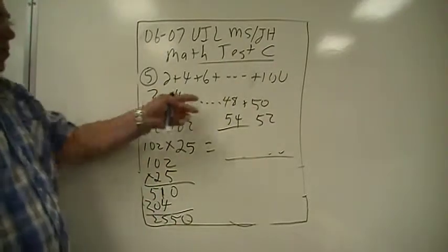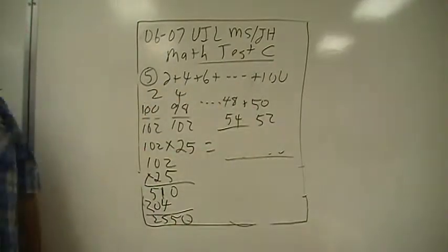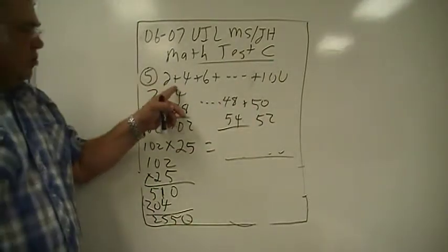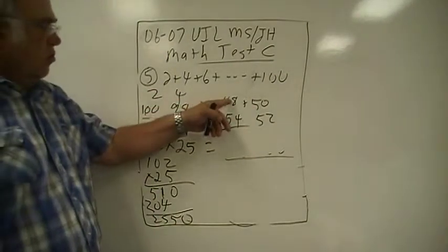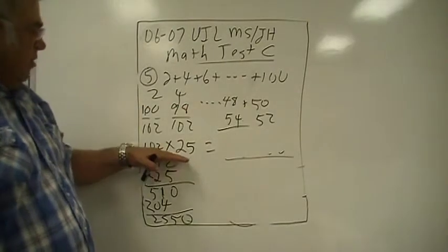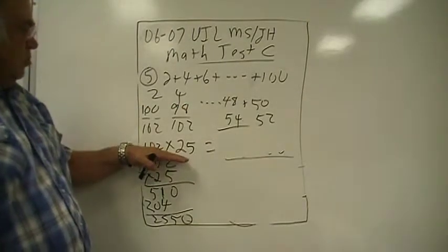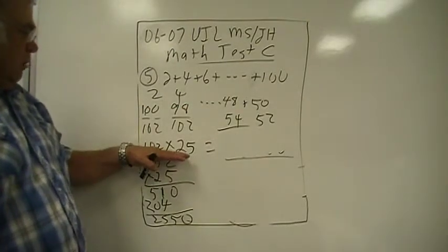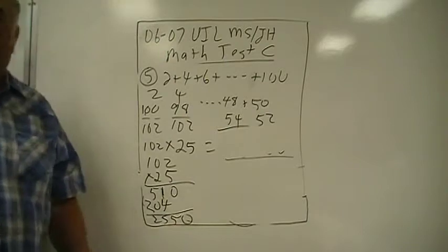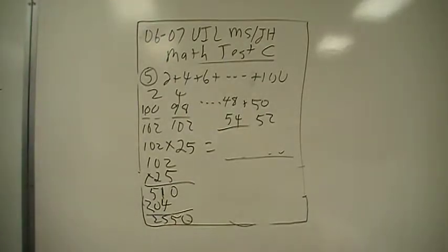So we just need to know how many we have there. And so if you count it, you've got one, two — this would be twenty-four, twenty-five. So you've got twenty-five one-oh-twos, you multiply that out, and you get twenty-five fifty.